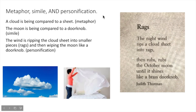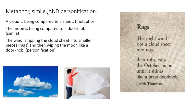Let's take a look at this poem, 'Rags' by Judith Thurman. 'The night wind rips a cloud sheet into rags, then rubs, rubs the October moon until it shines like a brass doorknob.' There is a lot of figurative language packed into this tiny little poem. There's a metaphor, simile, and personification in these short seven lines.